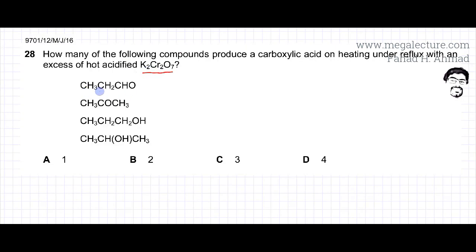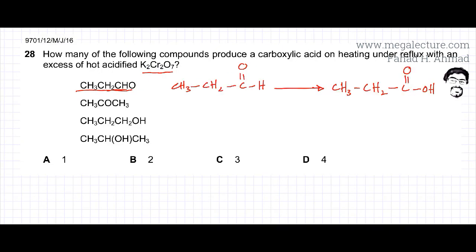The first option is an aldehyde. Here's the first reaction. Remember, aldehydes get oxidized to carboxylic acid when you heat it with K2Cr2O7. This carbon was forming an aldehyde first. Now it's forming a carboxylic acid. This is the first compound and it's going to get oxidized into a carboxylic acid. The first one is definitely changing into a carboxylic acid.